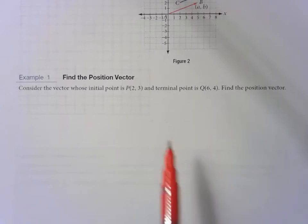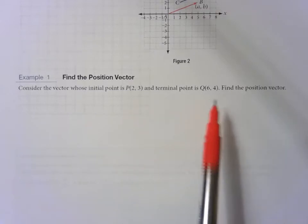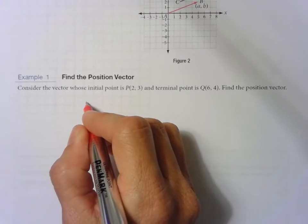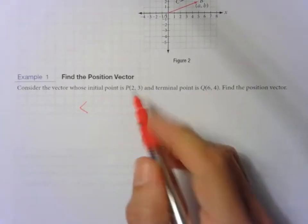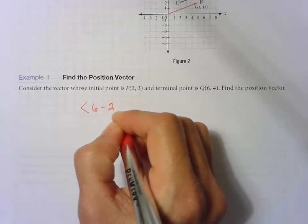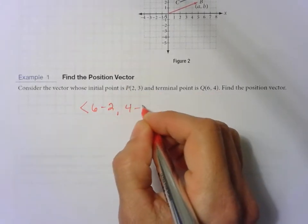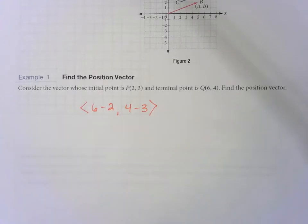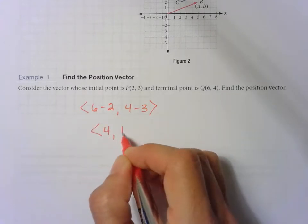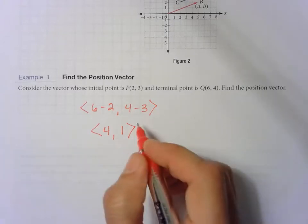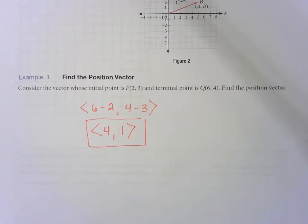Alright, so if we're given P(2,3) and Q(6,4), using the formula from the previous page, we find the difference in the x's, so 6 minus 2. The difference in the y's would be 4 minus 3. 6 minus 2 is 4, 4 minus 3 is 1. So our position vector is ⟨4, 1⟩.